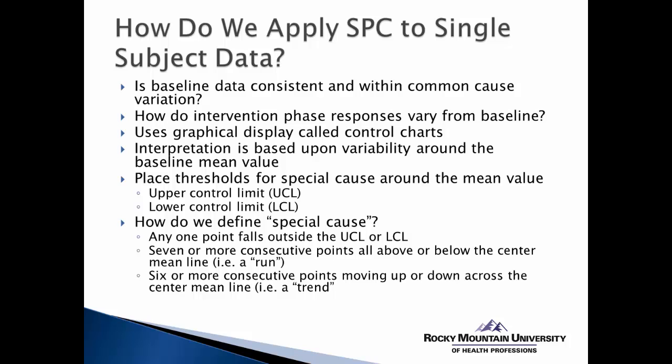These boundaries define the threshold for special cause. If a data point is above or below these control limits, we consider that data point to be affected by special cause variation. There are three basic rules we utilize. The first rule is that if any one point falls outside the UCL or the LCL, we consider that to be special cause variation. The second rule is if there are seven or more consecutive points that are all above or below the center mean line — this is called a run. The third rule is if there are six or more consecutive points that seem to be moving up or down and crossing the center mean line — this is known as a trend.